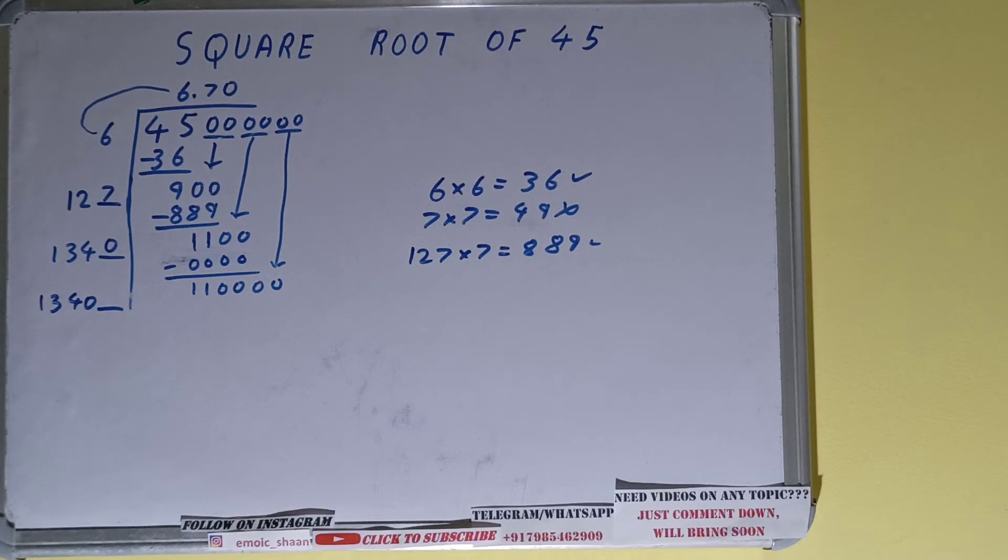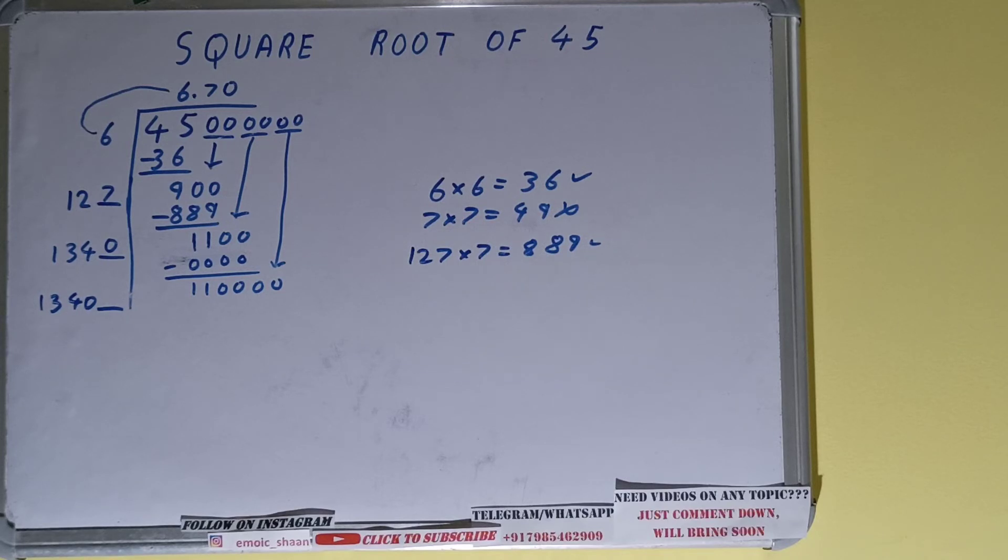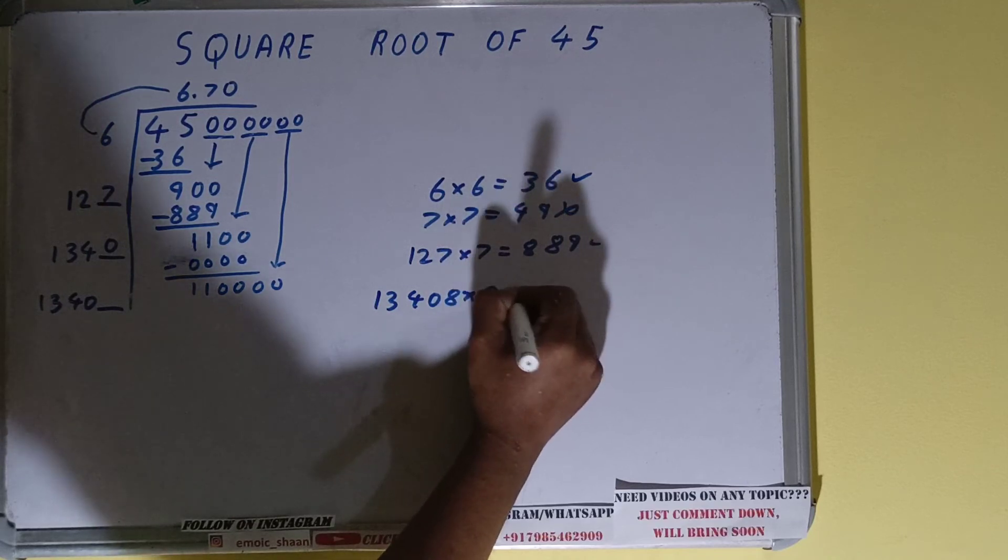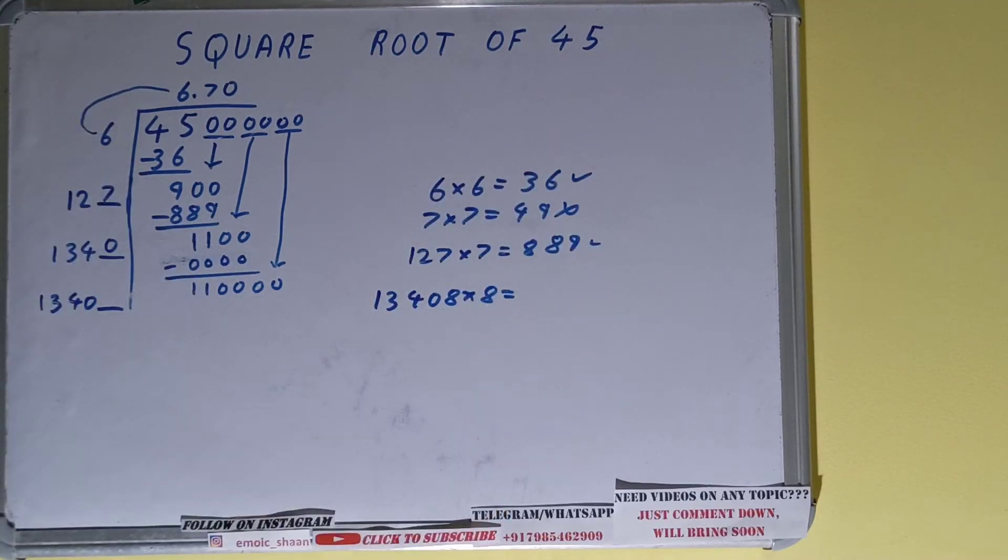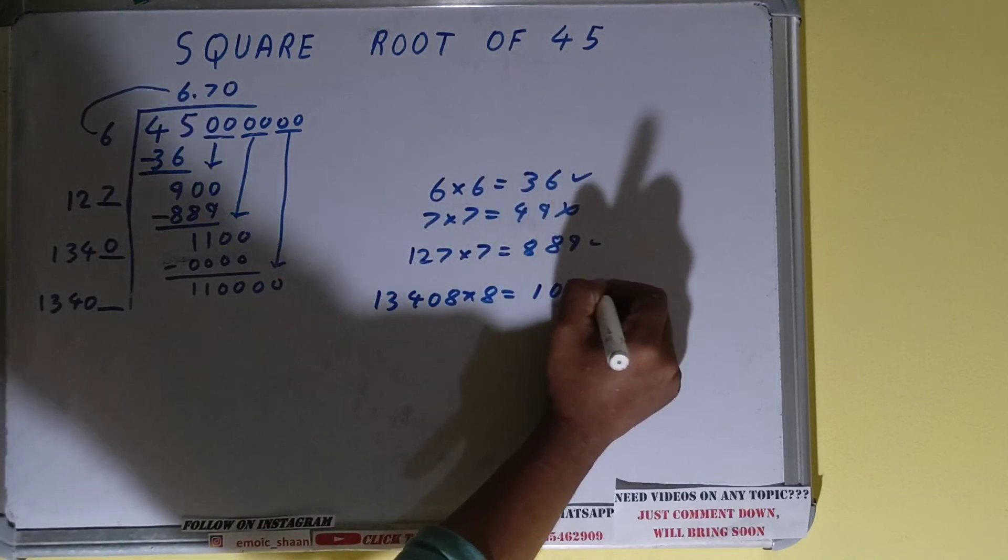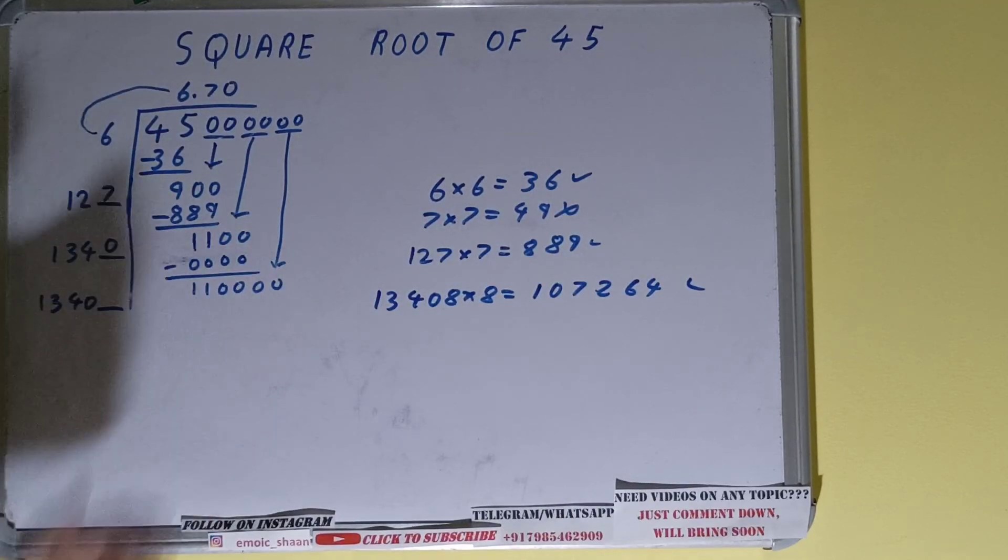So to divide it, this number is 110,000, right? So 13 times 6 is 78, 13 times 7 is 91, 13 times 8 is 104. So we can take 8 and consider it 13,408. And it will give the answer as 107,264. That is okay to take because that number is less than this number.